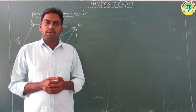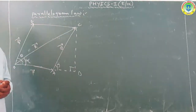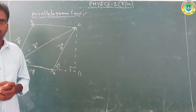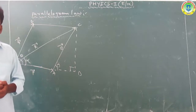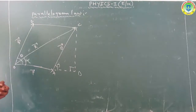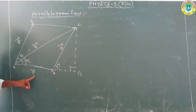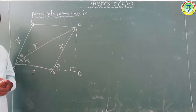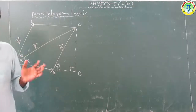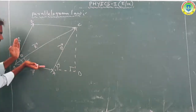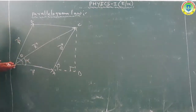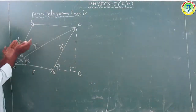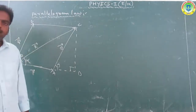Today we discuss the topic of the Parallelogram Law. The statement of the Parallelogram Law: consider P and Q as vectors - P is a vector and Q is also a vector - both having the same magnitude and same direction, and they are adjacent sides of the parallelogram.